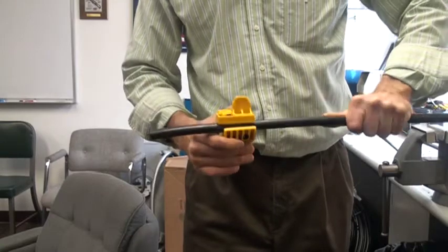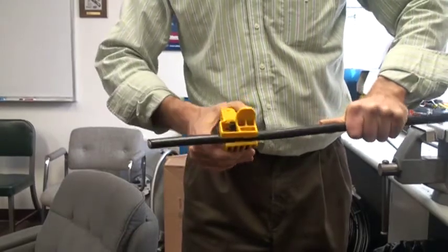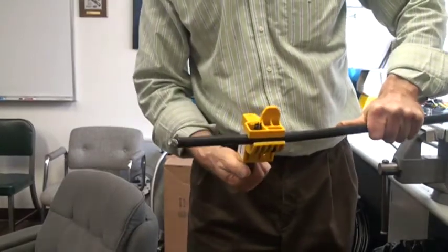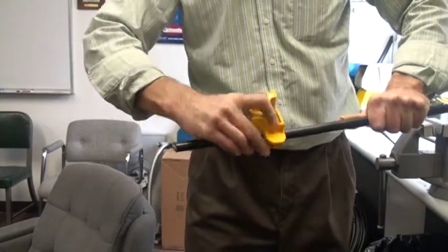Turn the tool clockwise until the blade catches the insulation. Then turn the blade depth knob to position number 2.